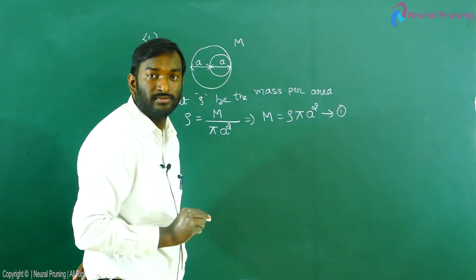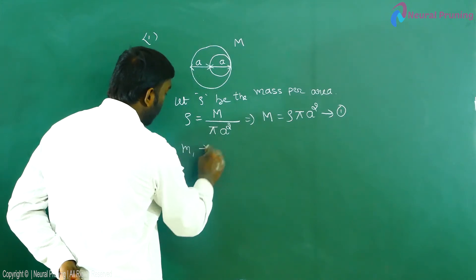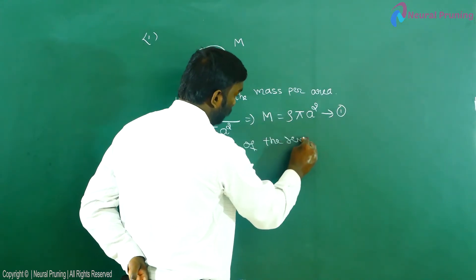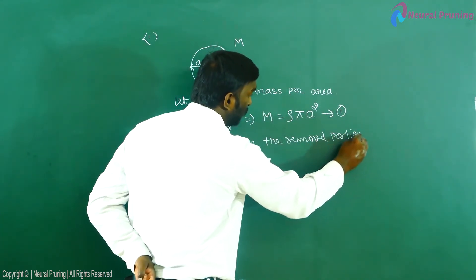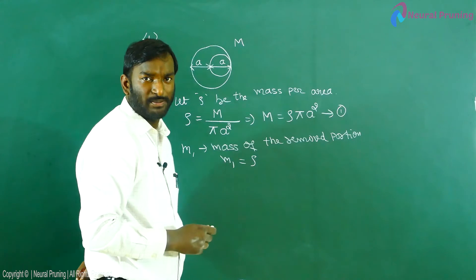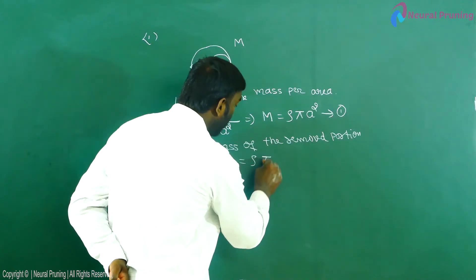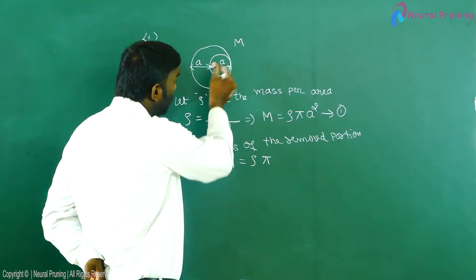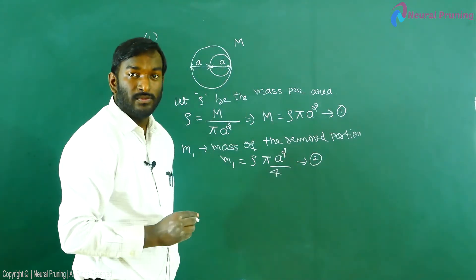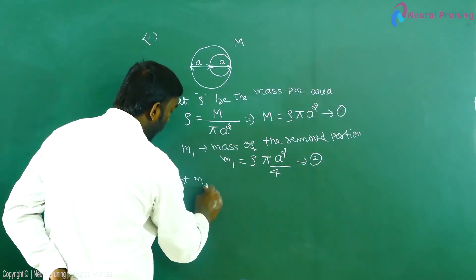Now find the mass of the removed portion. Let m1 be the mass of the removed portion of the circle. m1 equals rho times the area of the removed portion. Since rho is mass per area it remains the same. The radius of the removed portion is a/2, so the area is π(a/2)² = πa²/4. This is equation number two.